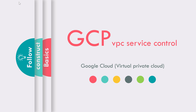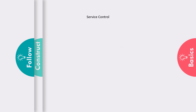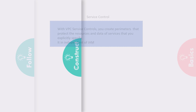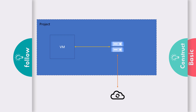This is a lecture on VPC Service Controls. When you create a service control in VCP, you can create a perimeter, and within that perimeter whatever resource is there is protected explicitly. It is a construct which is completely independent of IAM. Let's see how it looks diagrammatically.